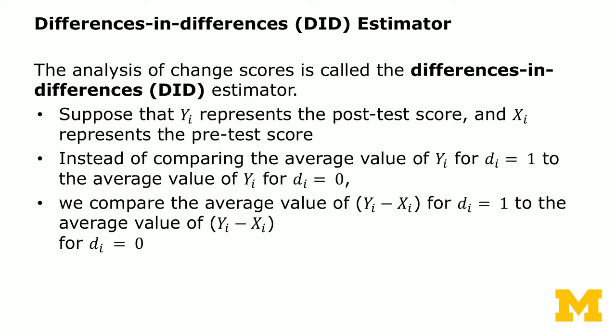Suppose Yi represents the post-test score — this is the education setting — and Xi represents the pre-test score. So for each student, if you have both the post-test score and the pre-test score, suppose in the middle you introduce some education intervention by reducing the class size or adding additional teachers into the classroom.